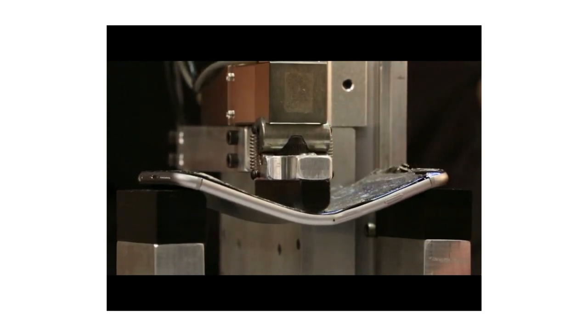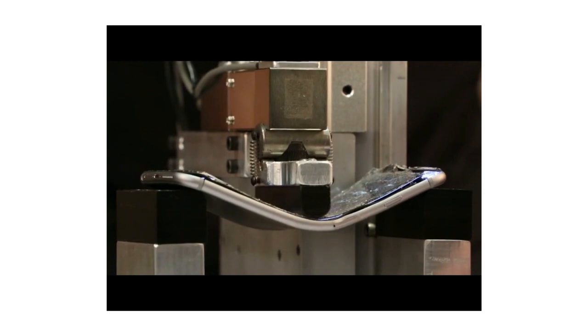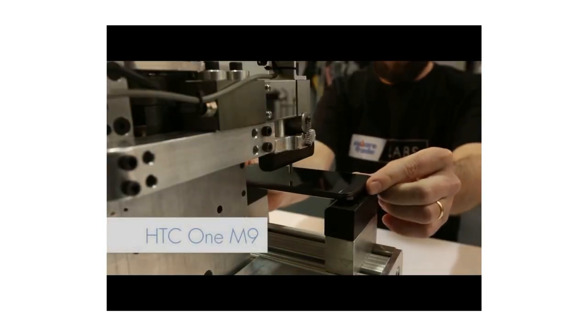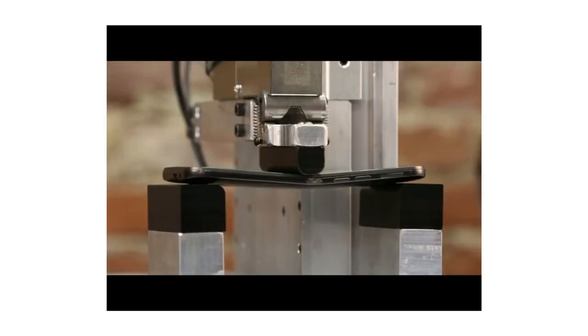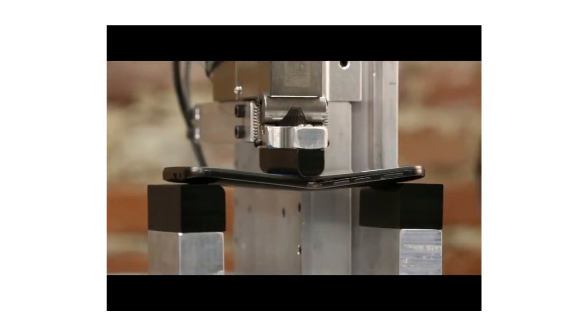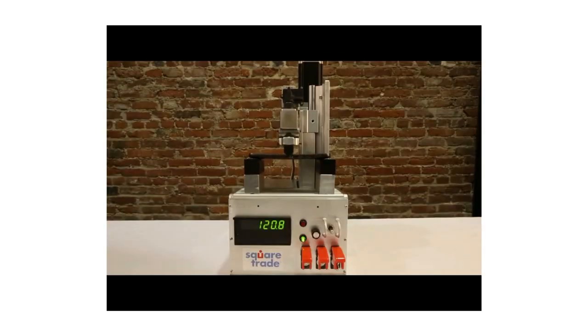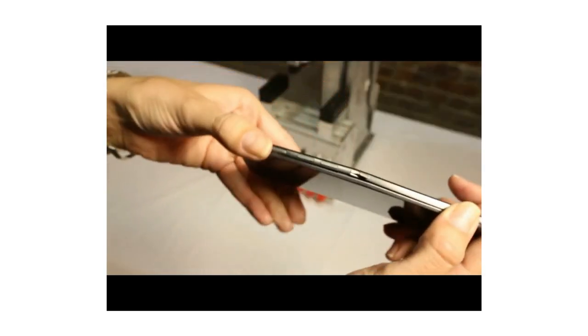Samsung's not yet released Galaxy S6 Edge fares considerably worse. It also bent at 110 pounds but the display also cracked along the curved edge at this pressure. It completely failed at a lower pressure than the iPhone at 149 pounds when the entire display shattered.